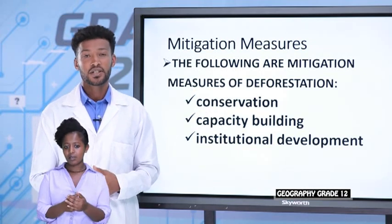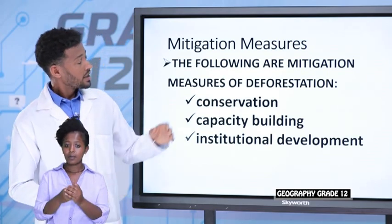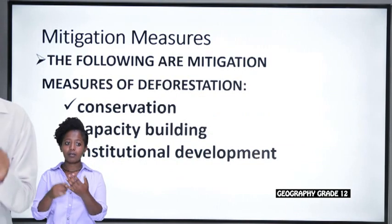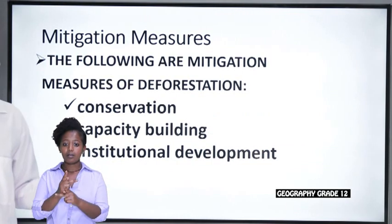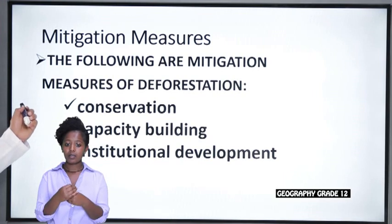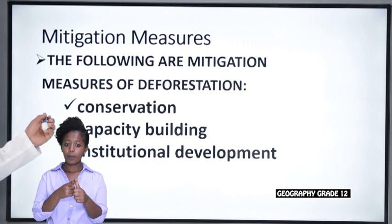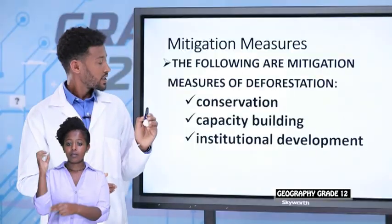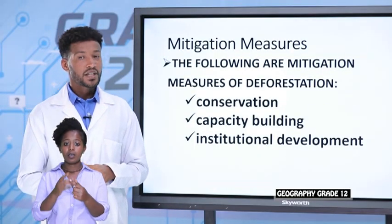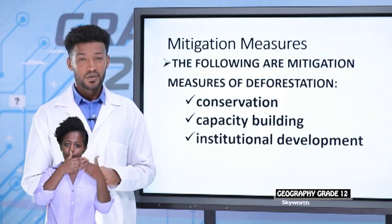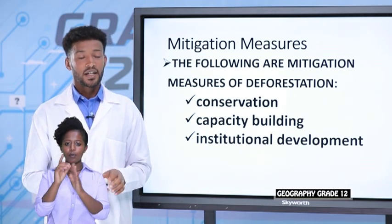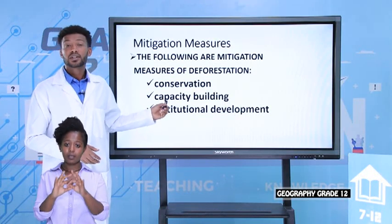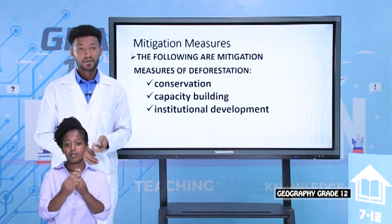To conserve our natural vegetation, we have to take mitigation measures. One important measure is capacity building and institutional development. The purpose of this is to make society aware so they conserve their natural vegetation.